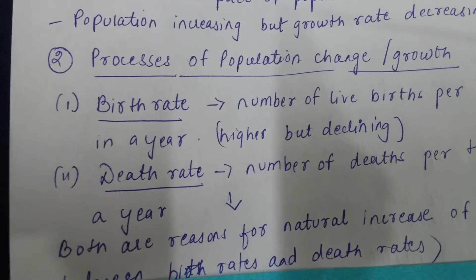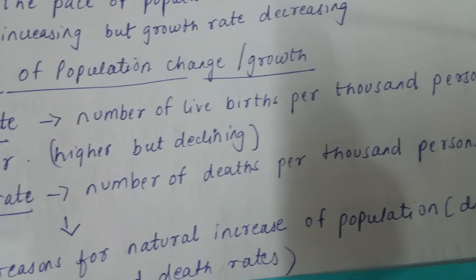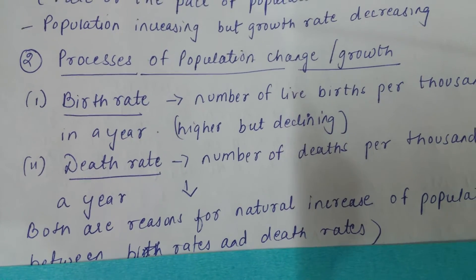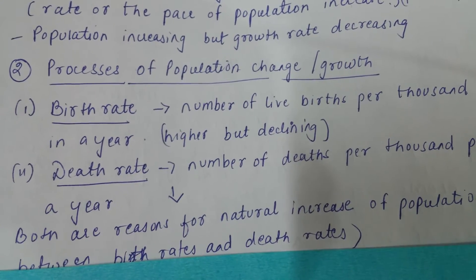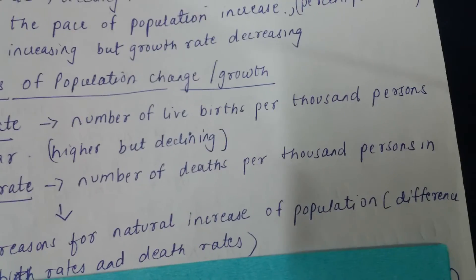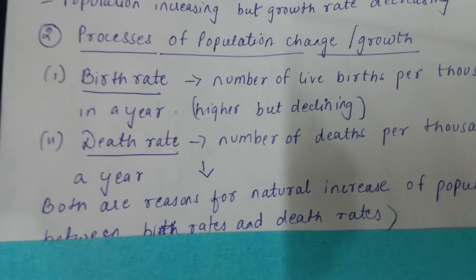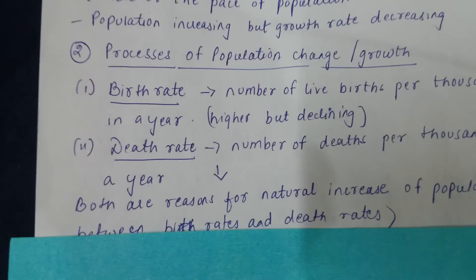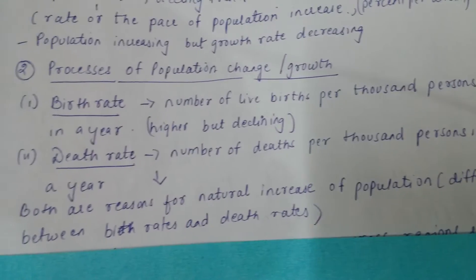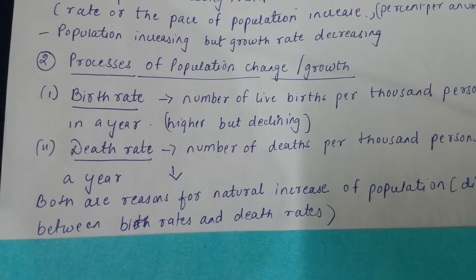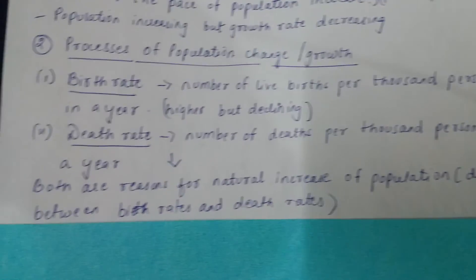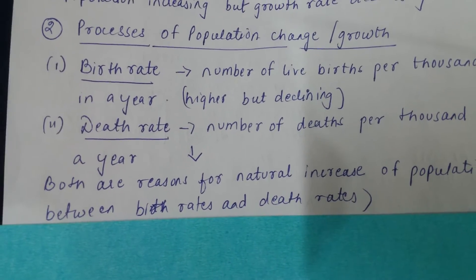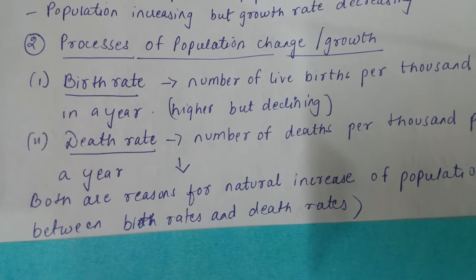Death rate is the number of deaths per thousand persons in a year. Birth and death are the natural reasons for an increase in a country's, state's, or district's population. To know the change or growth in population, you need to see the difference between the birth rate and the death rate — you need to know exactly how many people survived.